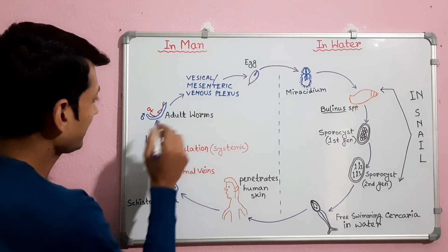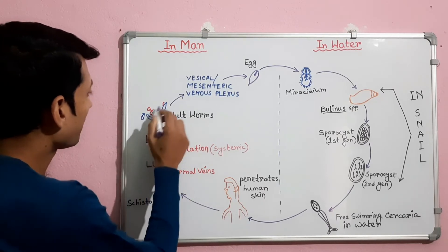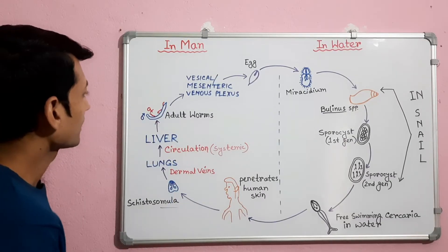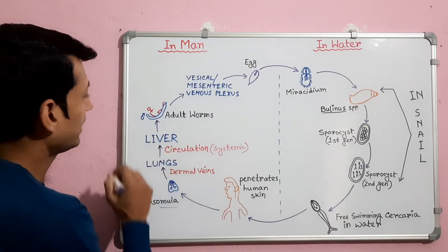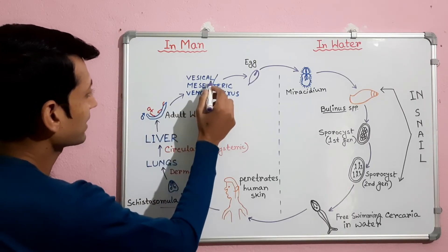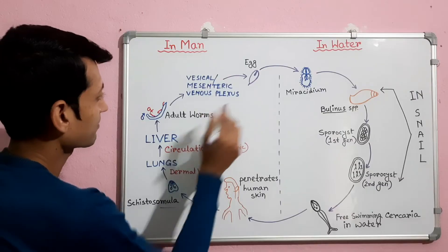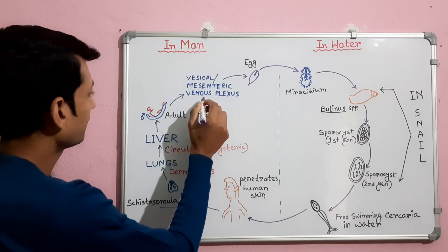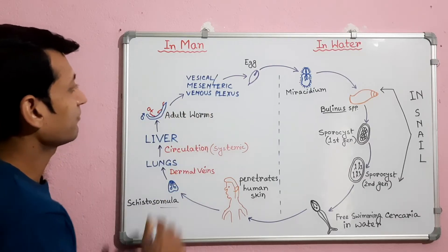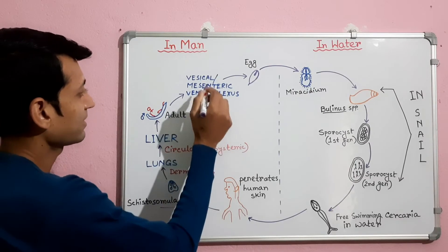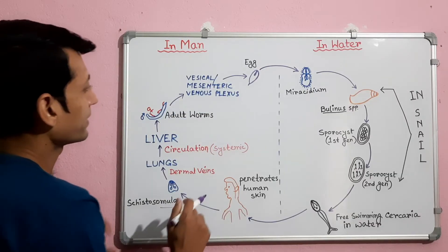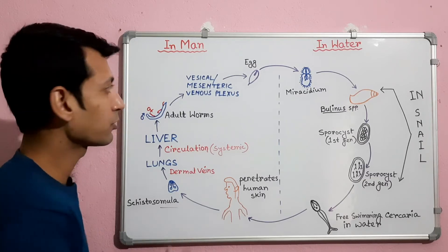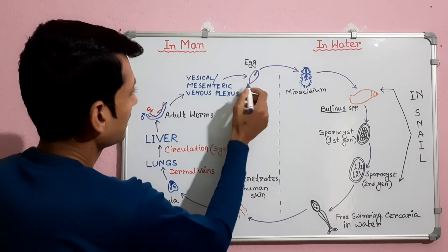When they become adults, pairing of male and female worms takes place. Then from the liver, they migrate to the vesical or mesenteric venous plexus, where the mature fertilized females lay eggs.